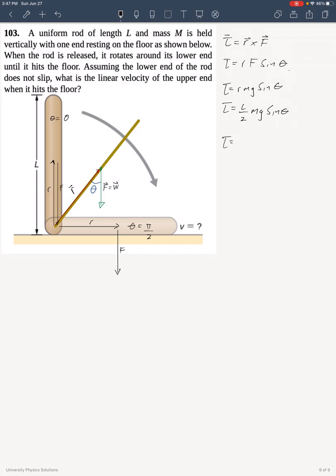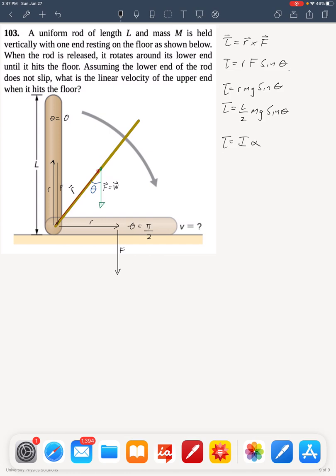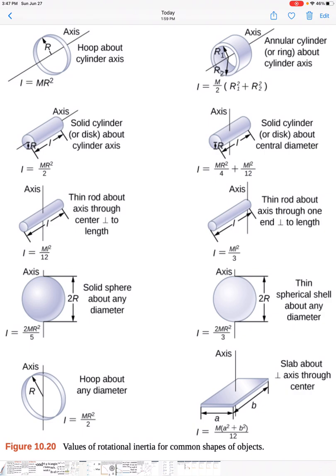So, now we need to relate torque to some angular acceleration, in order to get an angular speed. So we can remember that torque equals I alpha, where for a rod turning about an axis at its end, we see that we have a formula in figure 10.20, and it tells us that the moment of inertia is mL squared over 3. It is the third formula from the top, on the right-hand side.